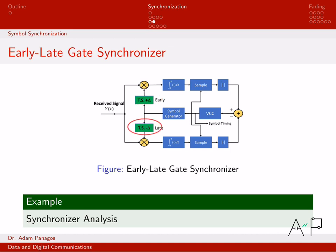We mix with either an early or a late version — shifted in time by some delta one way or the other. Then we do the multiplication, integrate, sample, and take the magnitude. At the output of each path we have a single number. Those two numbers get subtracted from each other, and that difference drives what we call the VCC — voltage controlled clock.